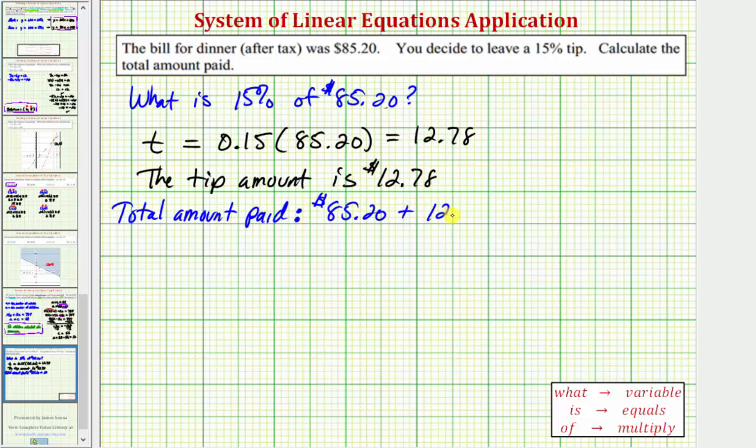plus the tip amount of 12 dollars and 78 cents, which equals 97 dollars and 98 cents. So this is the answer to the question.